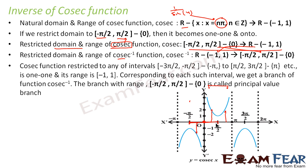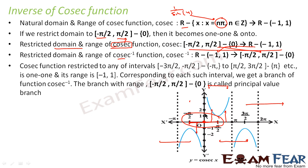There are multiple branches for which the cosec function is invertible — for example, from π/2 to 3π/2, from −π/2 to −3π/2, and so on. However, the branch from −π/2 to π/2 is the principal value branch, similar to what we chose for sine and cosine. Among all valid branches, the principal value branch is the one we generally use.